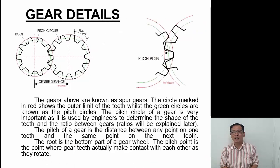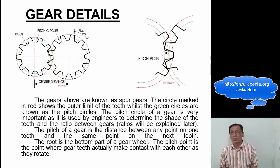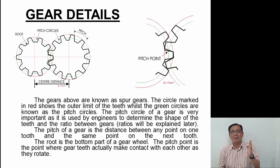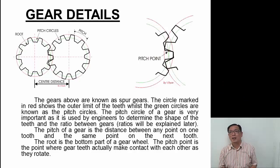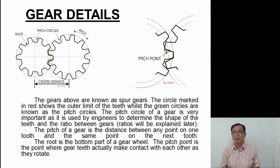There are some extra details about gears: there is something called the pitch circle diameter, the root, and pitch — which is the distance from one tooth of a gear to the next tooth. You can have a look at these details to appreciate more about gears.